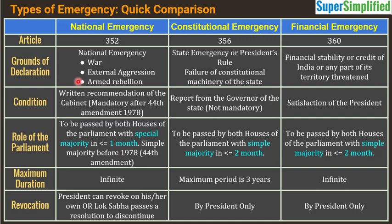The President's Rule or state emergency has the precondition of failure of constitutional machinery of the state. For financial emergency, the ground is very simple: if the financial stability or credit of India, or any part of its territory, is threatened, financial emergency can be invoked. All three types of emergency are proclaimed by the President only — not the Parliament, not the Prime Minister, not the State, but the President of India, subject to certain conditions.